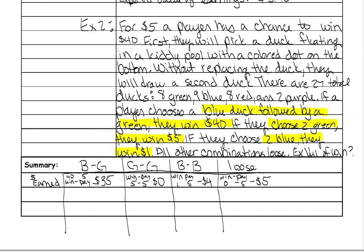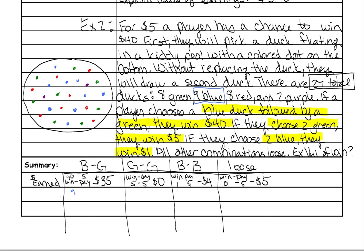Now we need to figure out the probability of each of these things happening. I'm going to draw an example pool right here to mimic what would happen. First we're going to choose a blue — so what's the probability of that? There are nine blues out of a total of 27 ducks. That's the first probability of choosing a blue. We take this blue duck out, and it does say without putting it back.